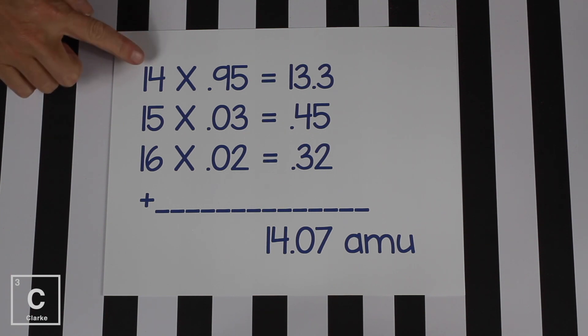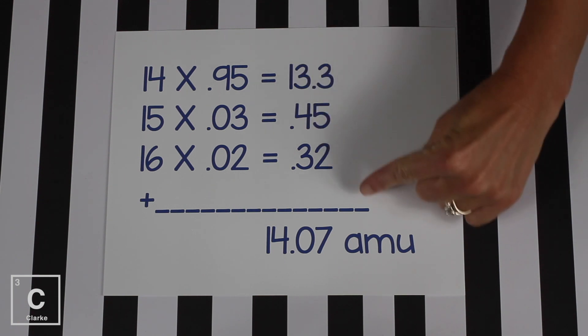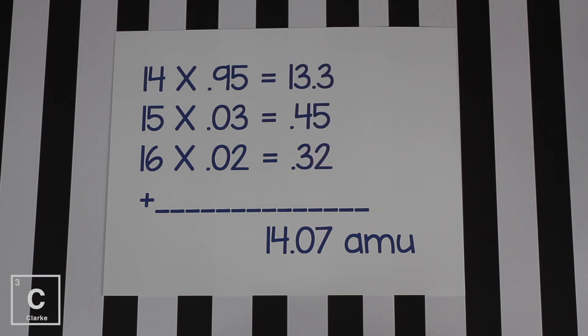So if we take those mass numbers and we multiply them by their percent, we've got 14 times .95 equals 13.3, 15 times .03 equals 0.45, 16 times 0.02 equals 0.32. Now that we have these totals, we just need to add them up. 14.07.